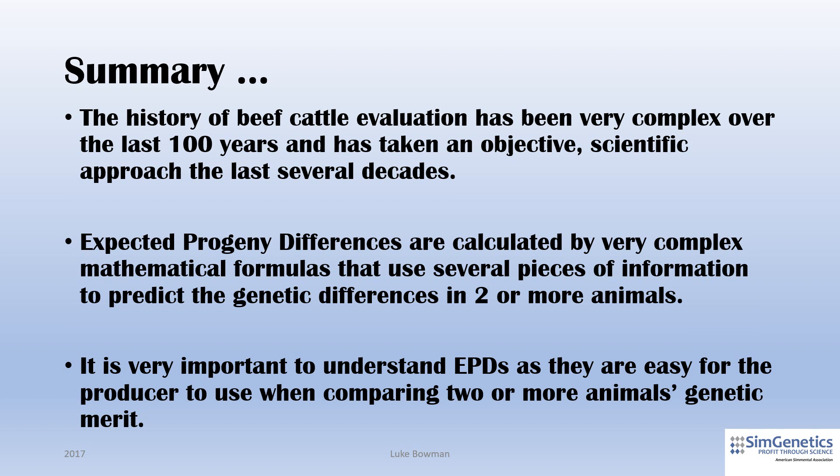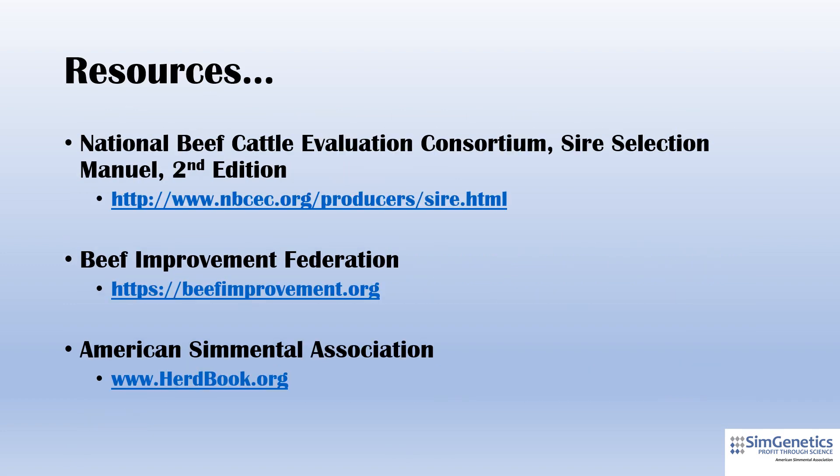In summary, the history of beef cattle evaluation has been very complex over the last 100 years and has since taken an objective and scientific approach over the last several decades. EPDs are calculated by very complex mathematical formulas that use several pieces of information to predict the genetic differences in two or more animals. It is important to understand EPDs as they are easy for the producer to use when comparing two or more animals' genetic merit. Resources for this presentation came from the National Beef Cattle Evaluation Consortium Sire Selection Manual, 2nd Edition, the Beef Improvement Federation, and the American Simmental Association.